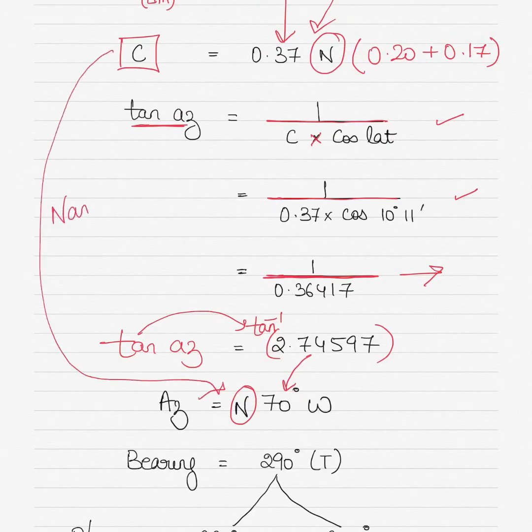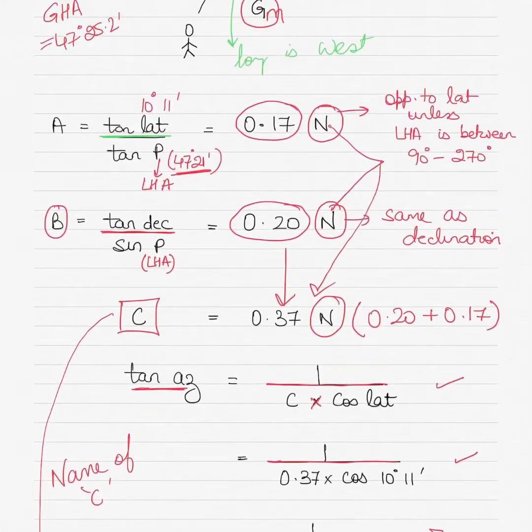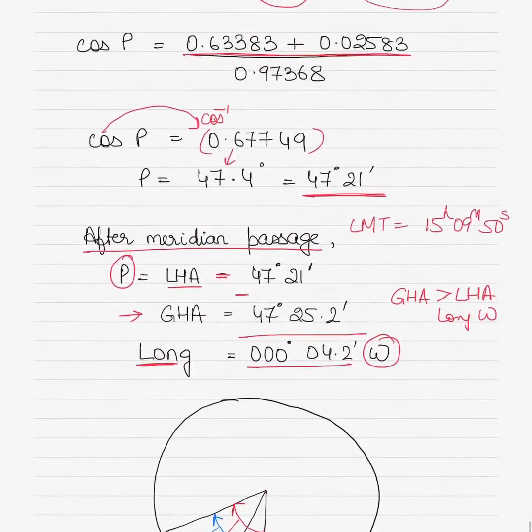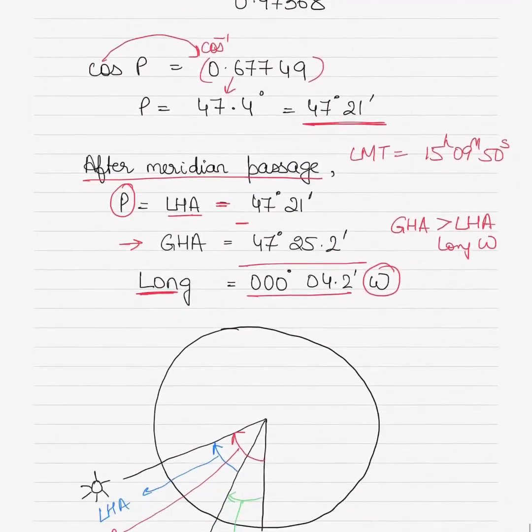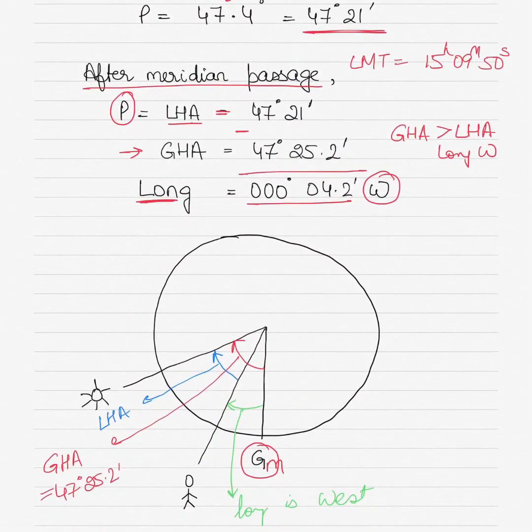West comes from LHA. Now how do I know LHA is west? If I go back up, I can see my LHA value is 47 degrees 21 minutes.